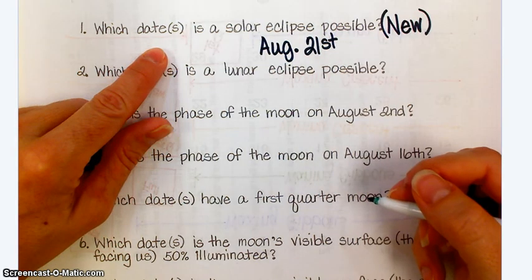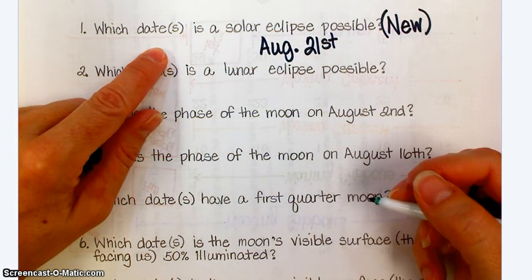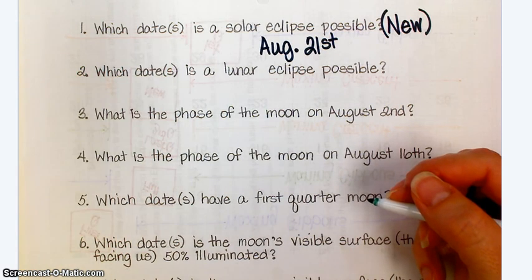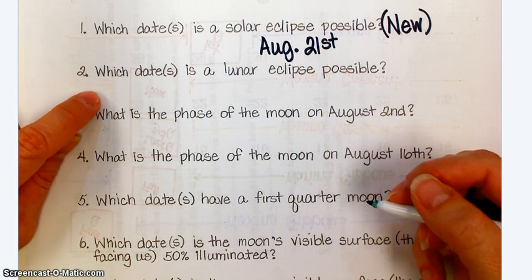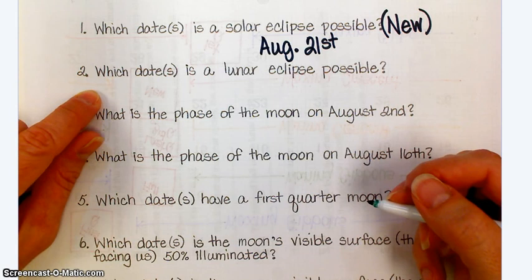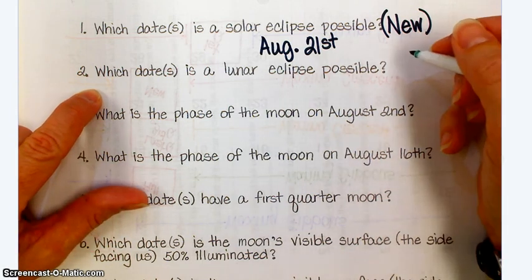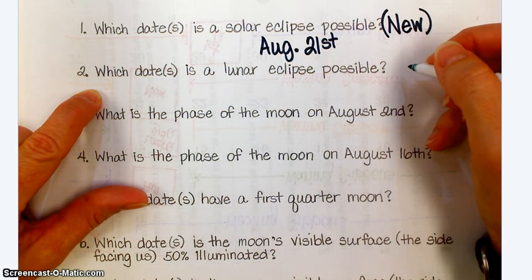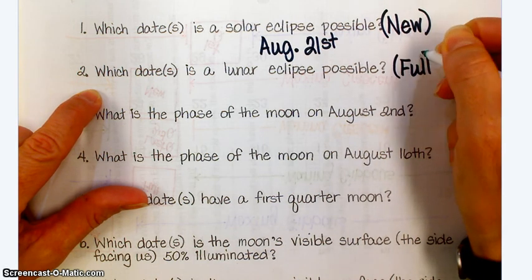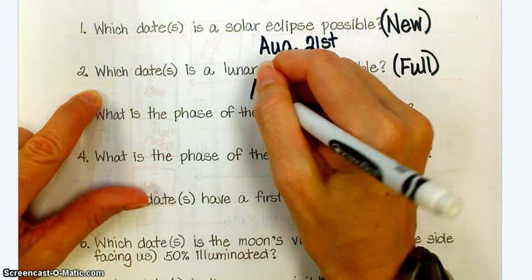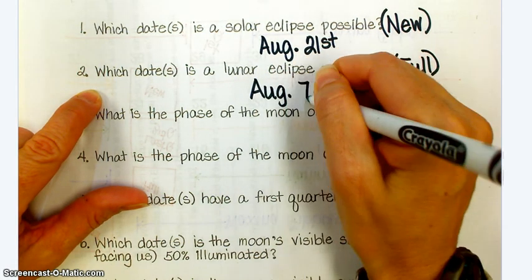That's actually the date of that 2017 solar eclipse that I went and saw that y'all saw the pictures. And it was almost overcast. We almost didn't see it. Now, a lunar eclipse did not occur this month. But what dates would a lunar eclipse be possible? You would have to have a full moon. So that's going to be August 7th.